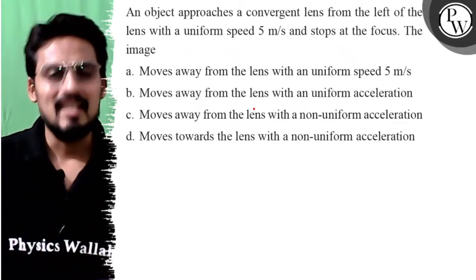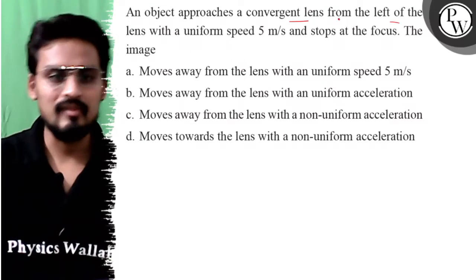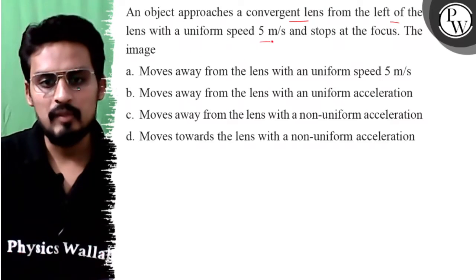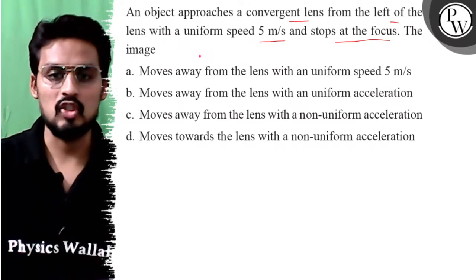Hello guys, let's see this question. An object approaches a convergent lens from the left of the lens with a uniform speed of 5 meter per second and stops at the focus. The image, okay.